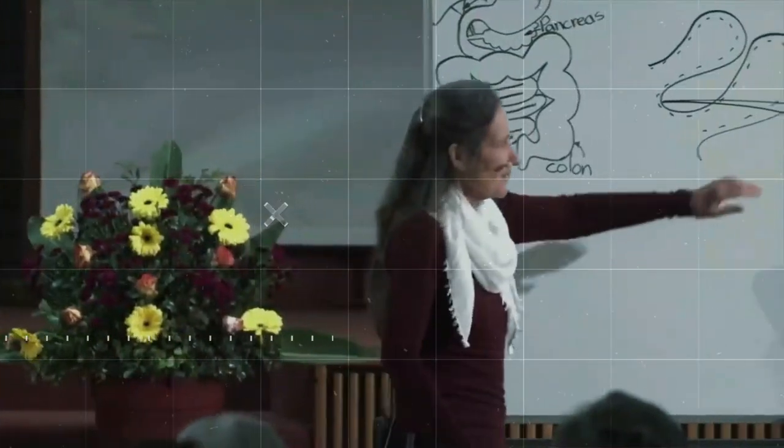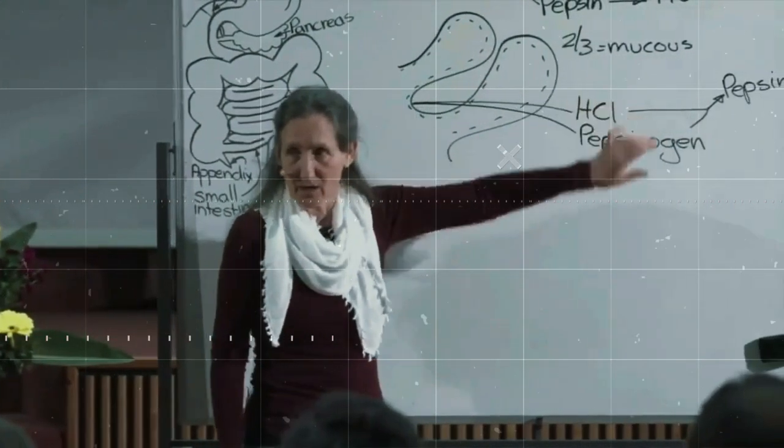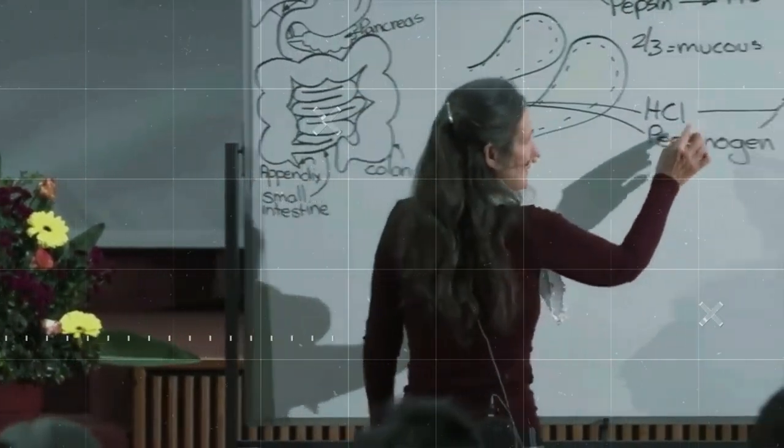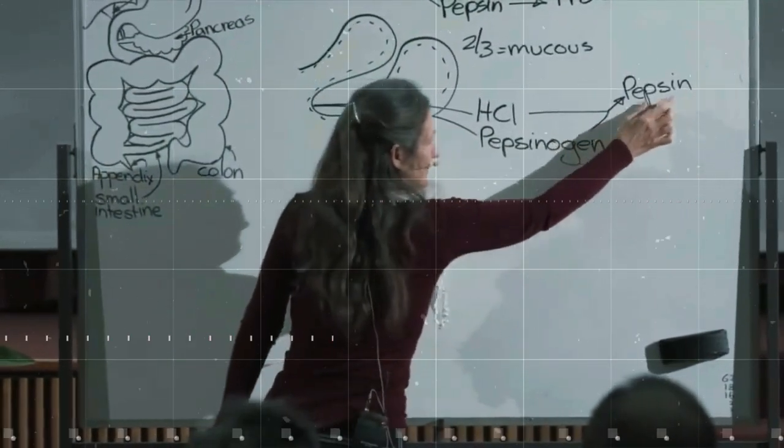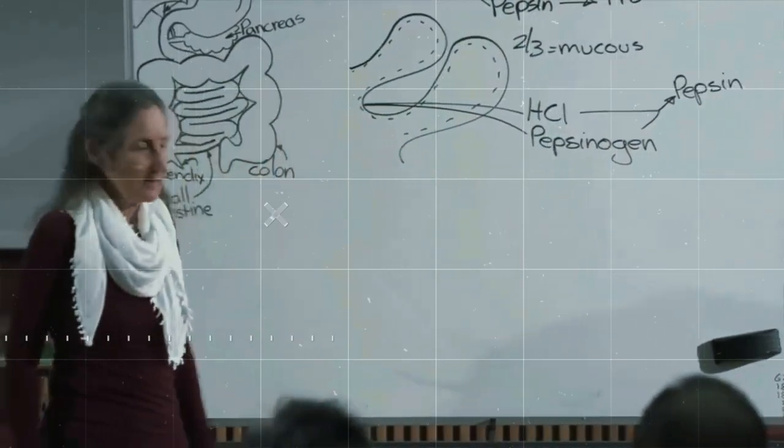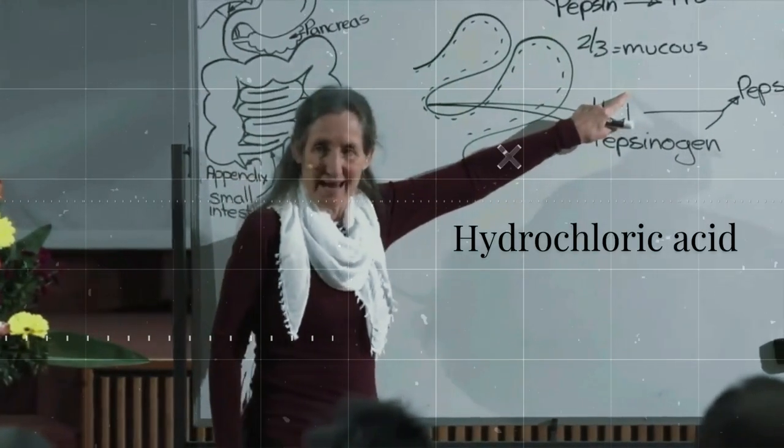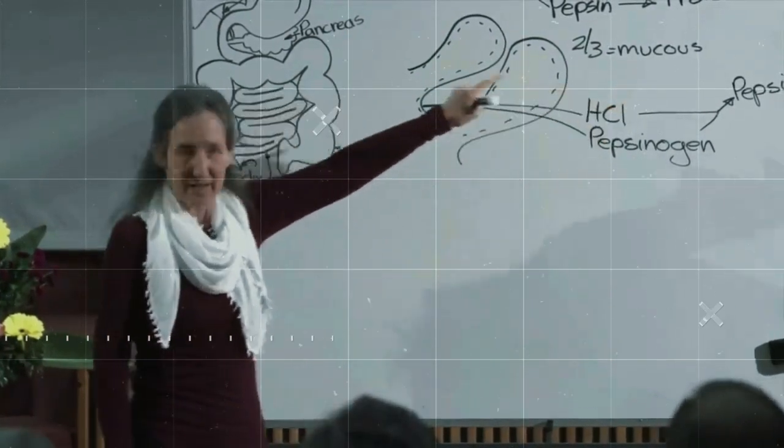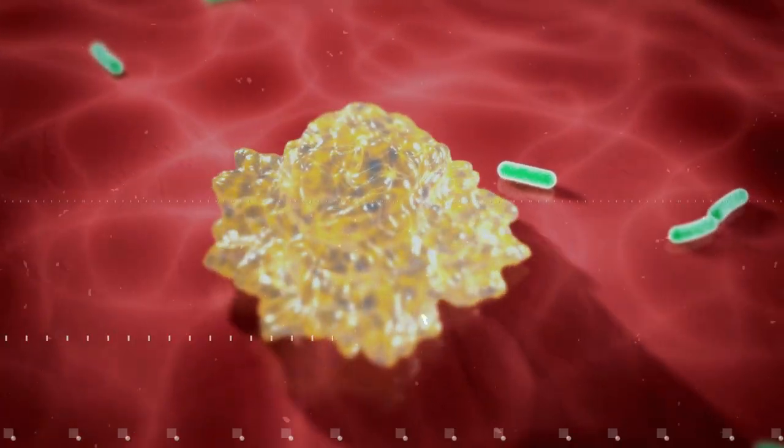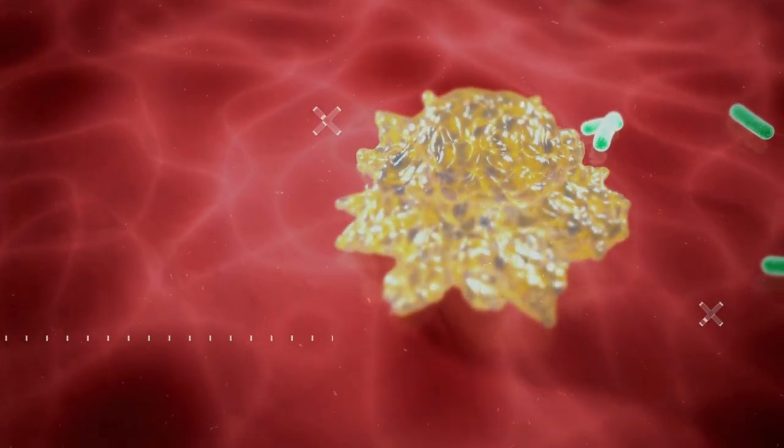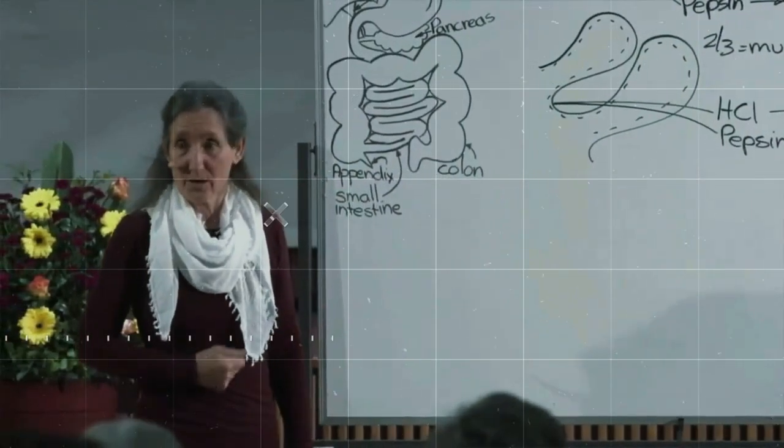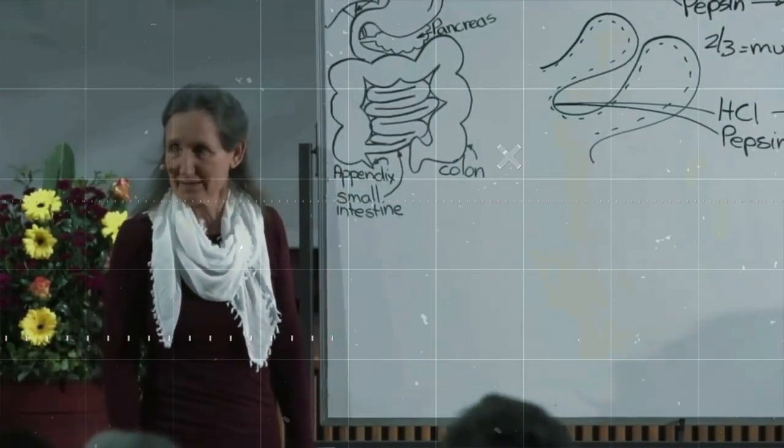But I'd like to speak a little bit about hydrochloric acid. Hydrochloric acid isn't just to unite with pepsinogen to produce pepsin. Hydrochloric acid is antifungal. It's antibacterial. So that if any bacteria happens to be on the food coming into the stomach, it'll wipe it out. So that's why it's very important to have nice, strong hydrochloric acid.